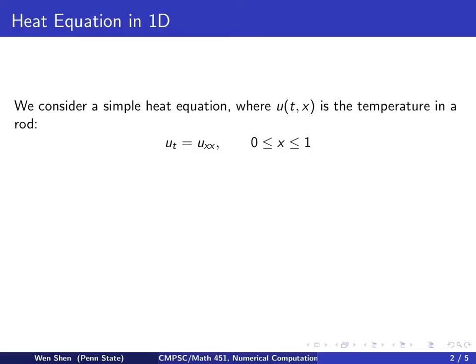So the equation has the unknown u, which is typically the temperature. You can consider temperature in a rod with unit length, so u sub t equals to u sub x x, first order derivative in time and second order derivative in space. Normally there will be a constant in front, but let's take it to be 1 for the time being. The equation is defined on the interval from 0 to 1.